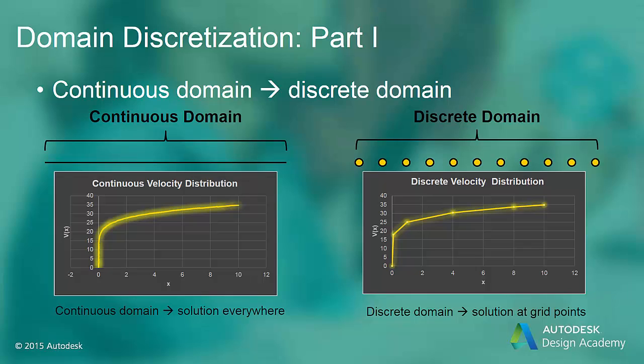The higher the number of grid points, the smaller the distance between them. In the figures at the bottom of the slide, the continuous variation of velocity is compared to the discrete representation of this variation. To better represent the curve for velocity, more grid points could be added. The more grid points we use to discretize the fluid domain, the more accurate the numerical solution will be. However, the cost and time required to obtain the numerical solution increases with the number of grid points used in the discretization.